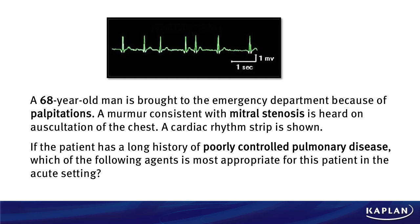And then we've got this cardiac rhythm strip. You've got to take a few moments to look at it and say: is this normal? Is this abnormal? Do I recognize it as something that perhaps I've studied before? And hopefully by test day, that answer is yes, so you can get more points. Then we go to the question: if the patient has a long history of poorly controlled pulmonary disease, which of the following agents is most appropriate for this patient in the acute setting? Notice that this isn't just asking what we treat this guy with — it tells us the scenario. This guy's got poorly controlled pulmonary disease. Given that, what's the best treatment for him?